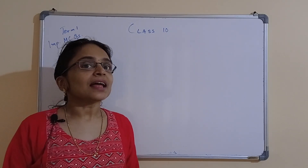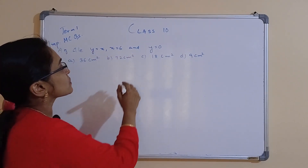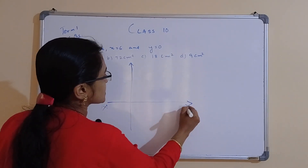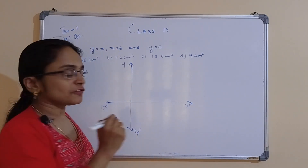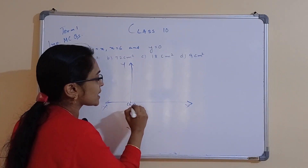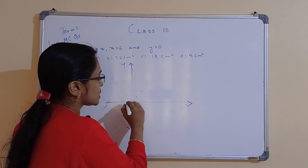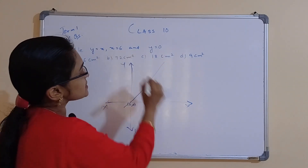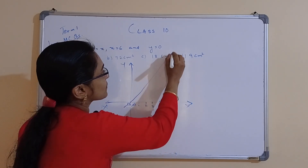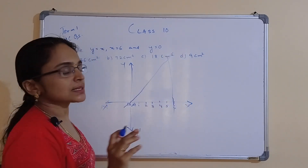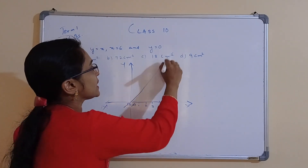The first question is: area of triangle formed by the lines y = x, x = 6, and y = 0. We can draw the graph — y = x passes through (1,1), (2,2), and so on. x = 6 is a vertical line at x = 6, and y = 0 is the x-axis. The triangle is formed by these three lines, with the vertex at (6, 6).